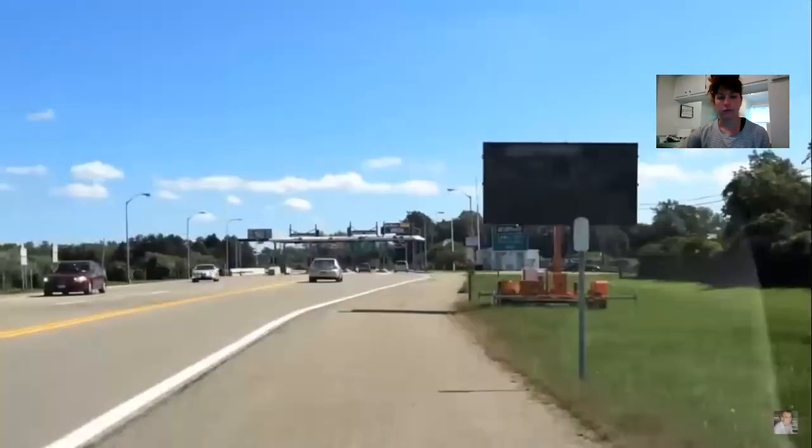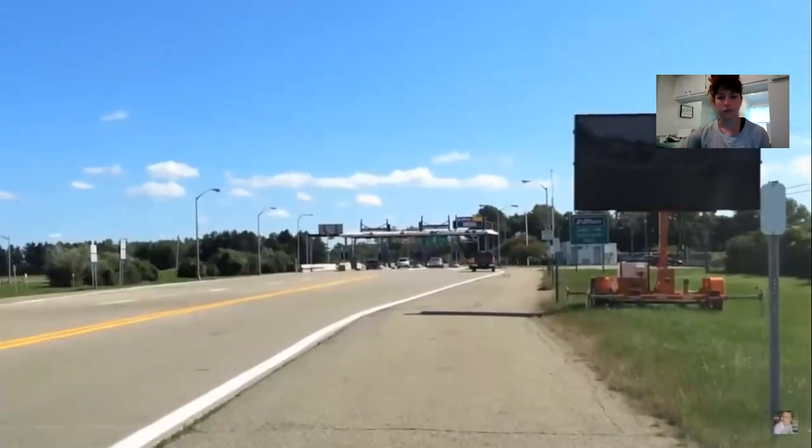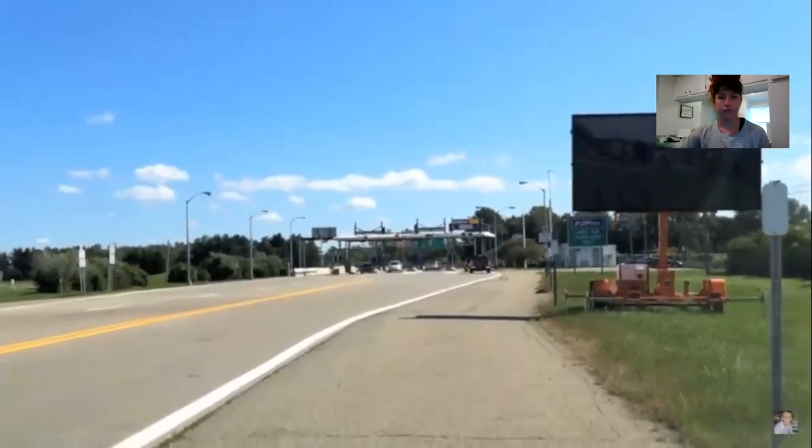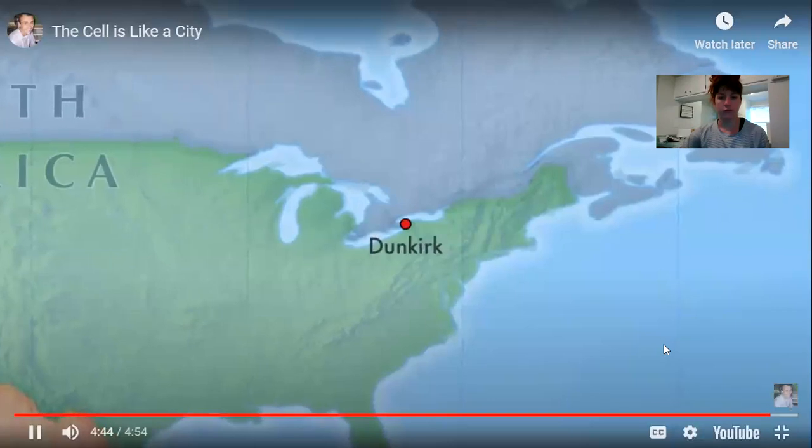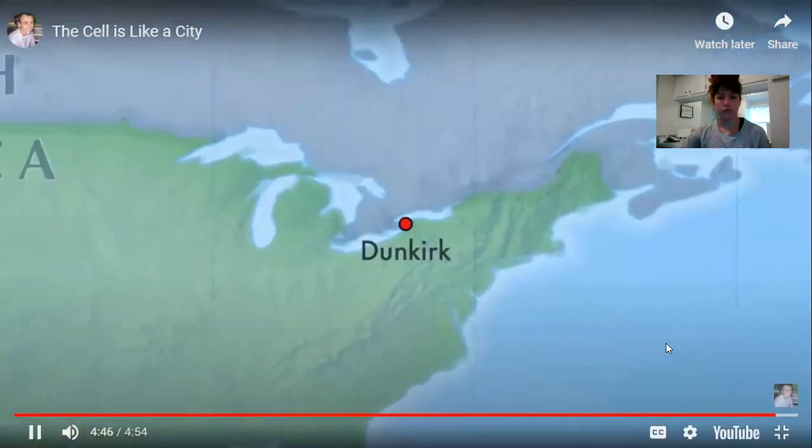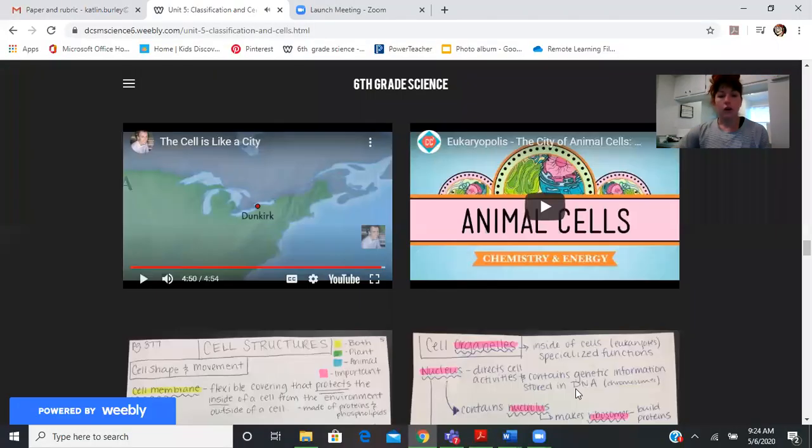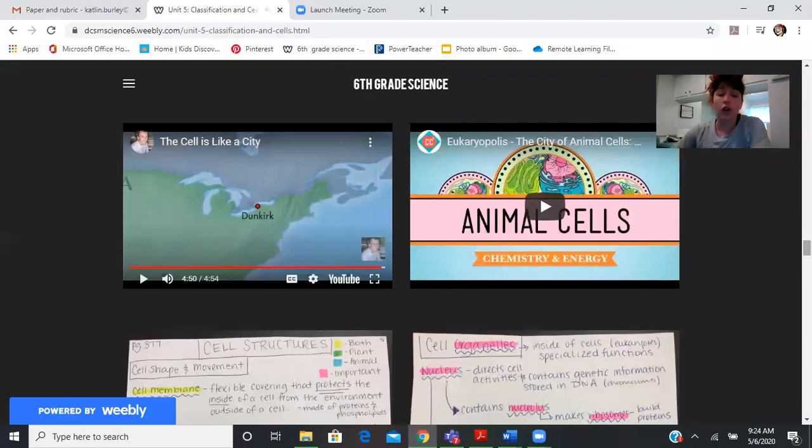Unlike the cell wall which is only found in plant cells, the cell membrane is found in every type of cell. Cells and the city of Dunkirk share many similarities.